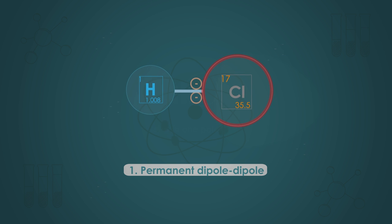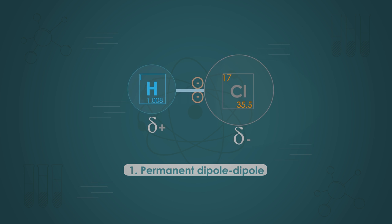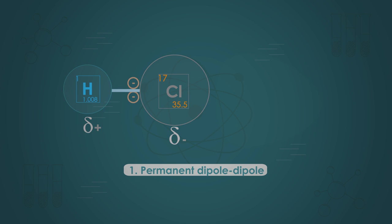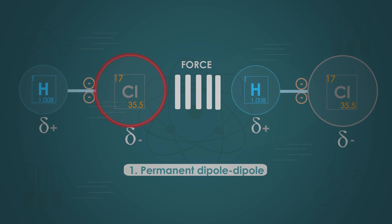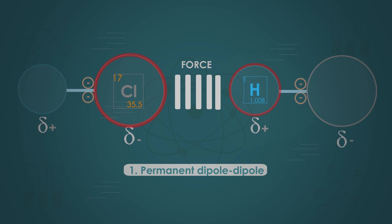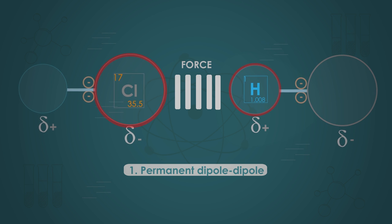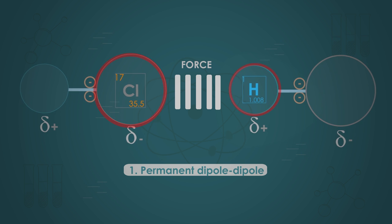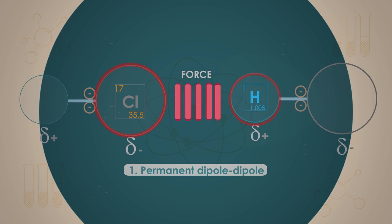We can represent the hydrogen chloride molecule as H, delta positive, and Cl, delta negative. Thus, there will be an attraction between the delta negative on the chlorine atom of one molecule and the delta positive on the hydrogen atom of a neighbouring molecule. The diagram below shows the permanent dipole-dipole force between the two molecules of hydrogen chloride, indicated here by the red dashed line.